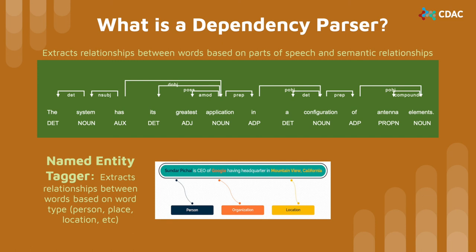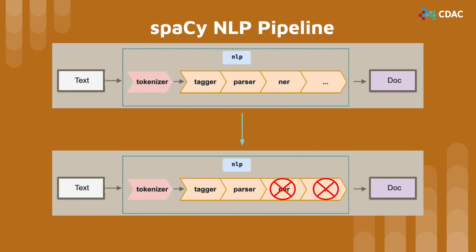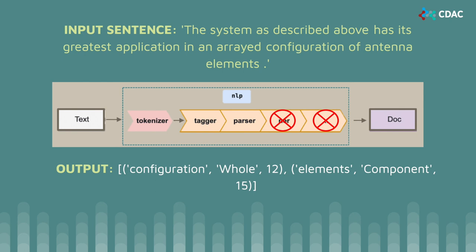We did not use a named entity tagger as they are costly and they would take more time to run. Here you can see how we adapted spaCy's default NLP pipeline by disabling the named entity tagger, abbreviated here as NER, and not adding any extra features after. For example, let's say our sentence is the one at the top here. After pushing the sentence through our model, the model correctly predicted that the pair would be the words 'configuration' and 'elements.' The model also correctly predicted the component-whole relationship between the words — the elements are component to the whole configuration.